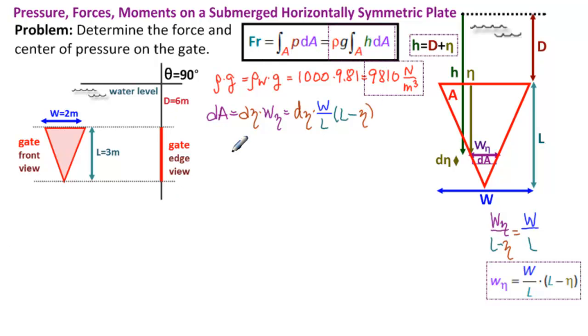How much is our resultant force? FR equals rho G times W over L can come up front. Don't forget that H is D plus eta. So D plus eta times L minus eta times d eta. And eta goes from 0 to L, from 0 to L. So this is our integral. We simply need to substitute our values and calculate.